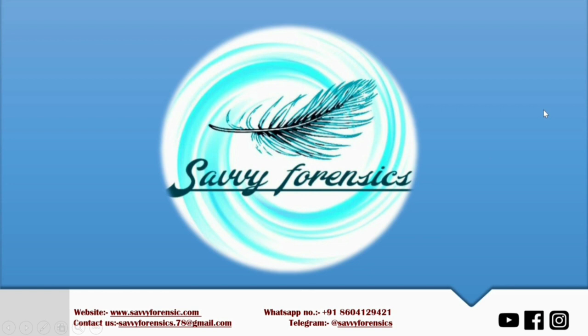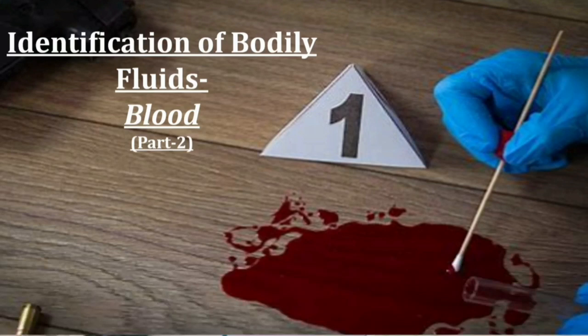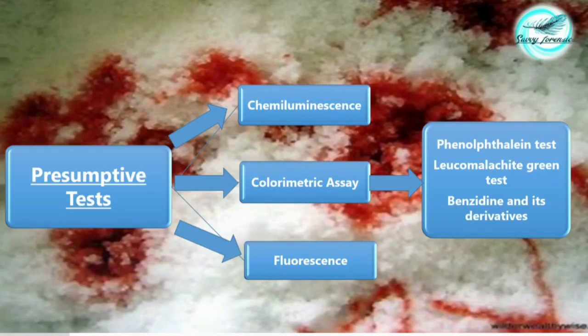Welcome back to Savvy Forensics. In the previous video we talked about the basic principles of identification of body fluid — specifically blood. In this video we'll be discussing the preliminary examination or presumptive tests used for the identification of blood. As you can see in the flow chart here, there are basically three tests done for preliminary identification of blood or blood stains.